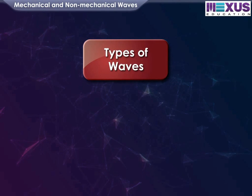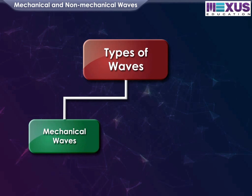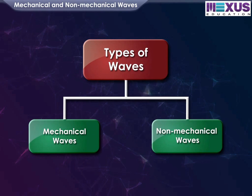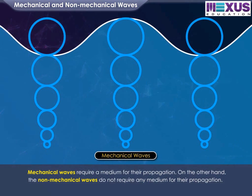Waves are of two types: mechanical and non-mechanical. Mechanical waves require a medium for their propagation. On the other hand, non-mechanical waves do not require any medium for their propagation.